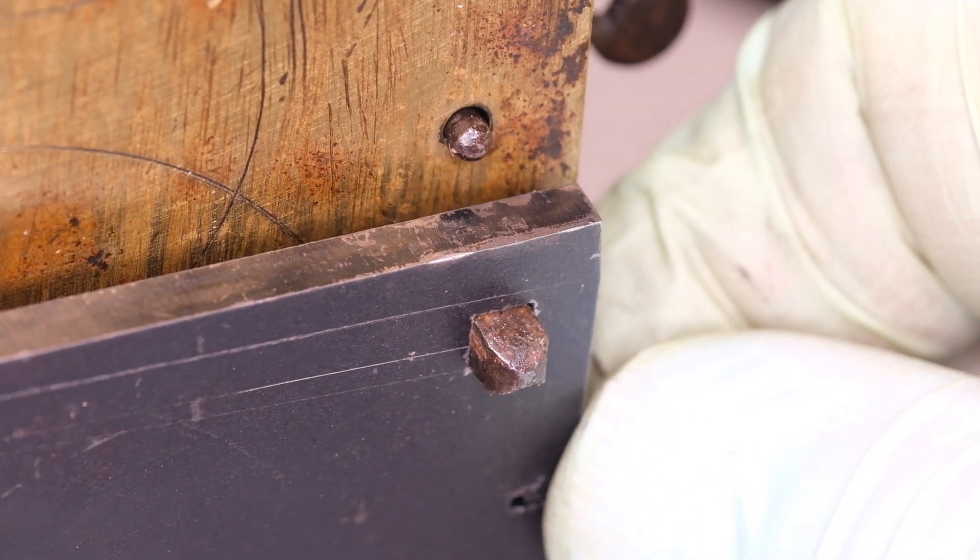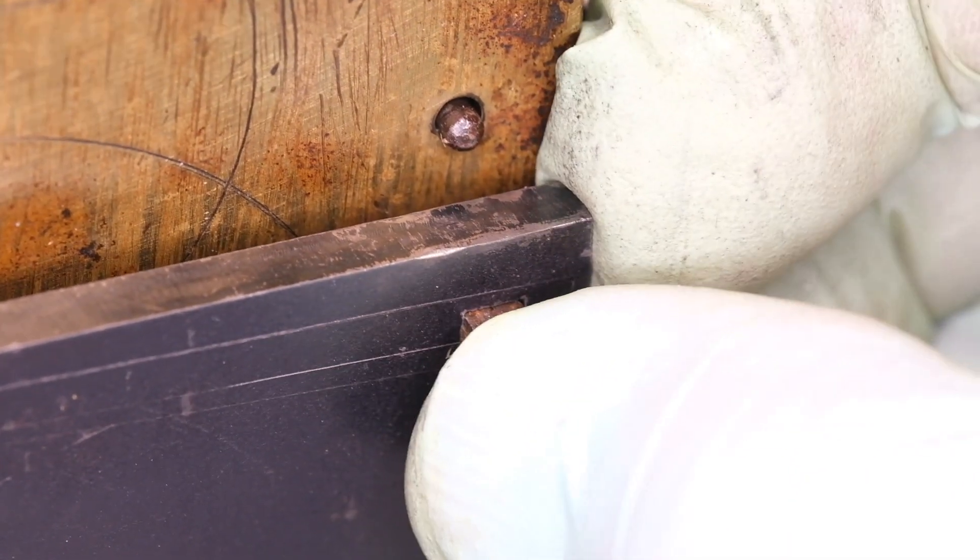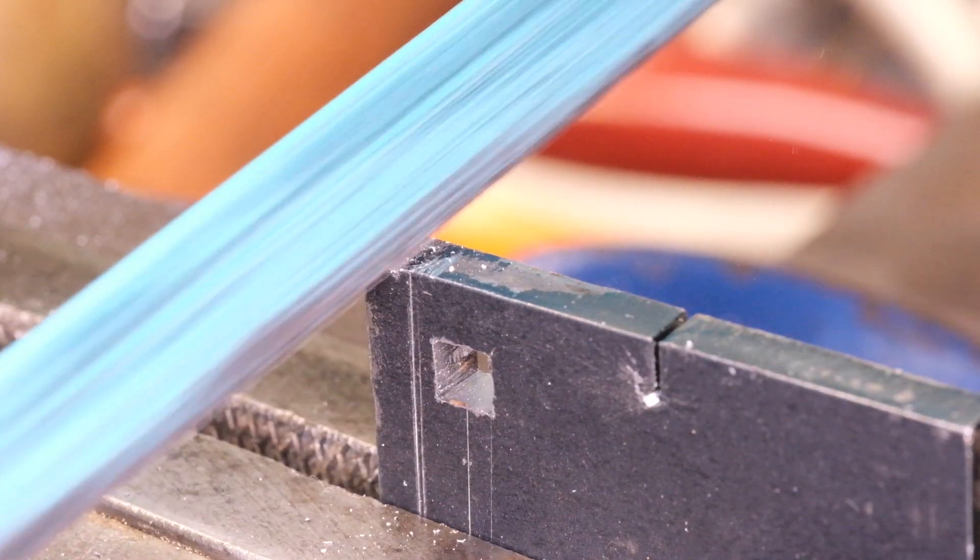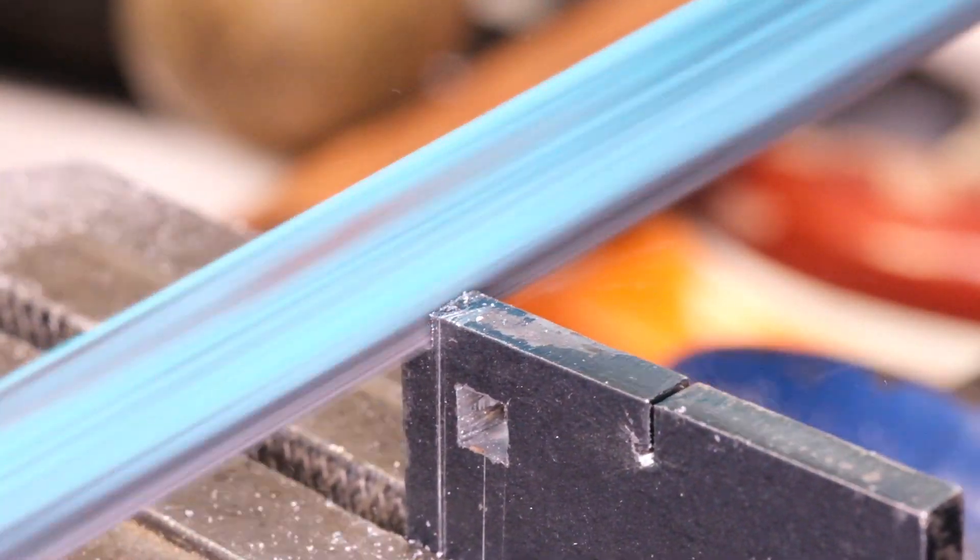So once we've got our lifting piece fitting on the arbor, we can begin to rough out the overall shape.